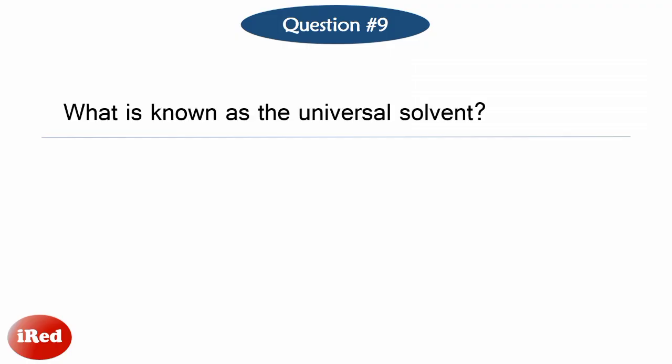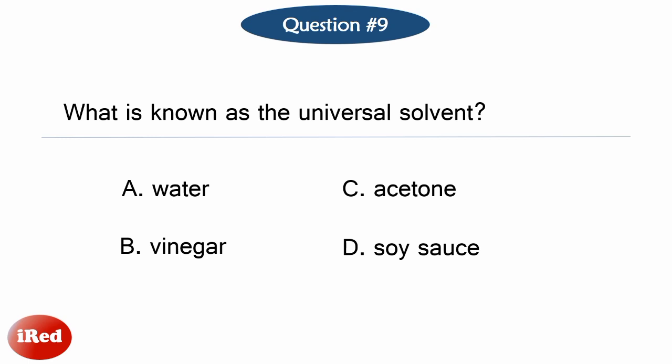Number nine: What is known as the universal solvent? Letter A: Water. Letter B: Vinegar. Letter C: Acetone. Or letter D: Soy sauce.